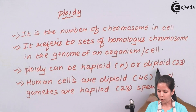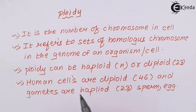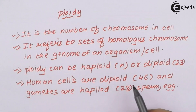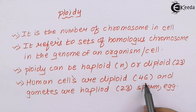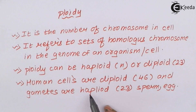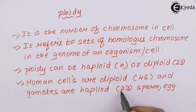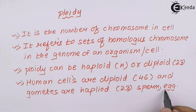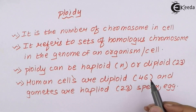When I talk about Ploidy, human cells have diploid — that is, they together have 46 chromosomes, which is the diploid number of chromosomes in somatic cells — whereas their gametes are nothing but 23. The sperm and the egg cells are basically haploid in number.